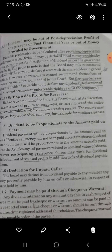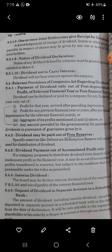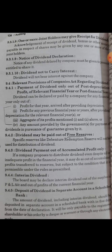Next important point regarding rules and regulations: dividend must not carry interest against the company. An important point here is that the company cannot pay dividend by putting at risk the security of creditors and debenture holders. Dividend must not be paid so as to deprive creditors and debenture holders of their security. So, by risking the security of creditors and debenture holders, the company cannot pay dividend. These are the various provisions provided under the Article and Memo of the company.